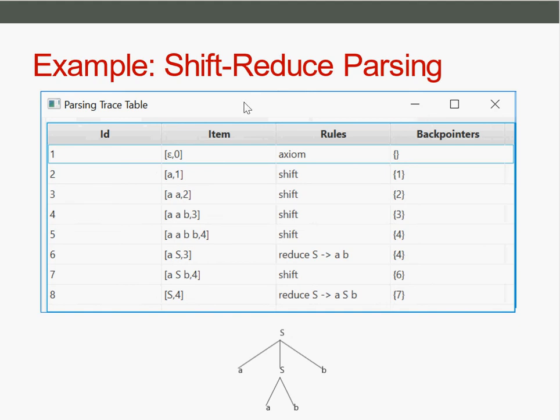So here we have the parsing table for our shift reduce parsing. Here we are starting with our axiom with the empty stack at the beginning and index of zero.